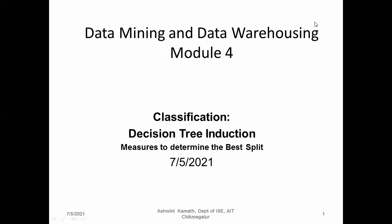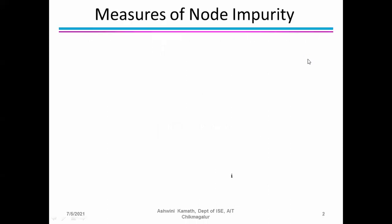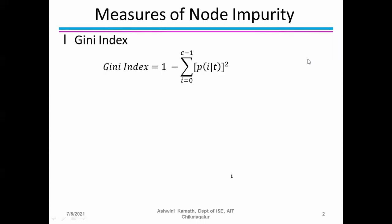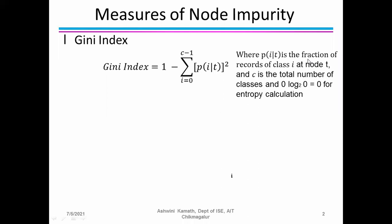Today we will continue with the concept of measures to determine the best split — specifically, measures of node impurity. To find the measures of node impurity, we have three formulas: the Gini index, entropy, and misclassification error. The Gini index is 1 minus the summation from i=0 to c−1 of p(i|t) squared, where p(i|t) is the fraction of records of class i at node t, and c is the total number of classes.